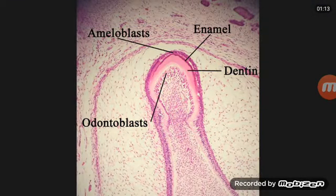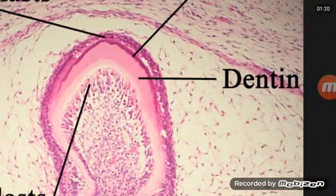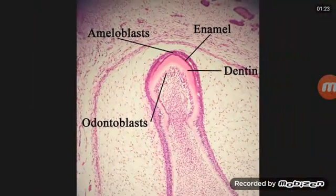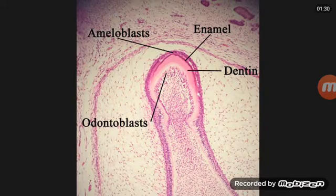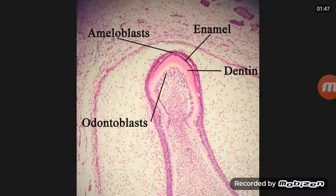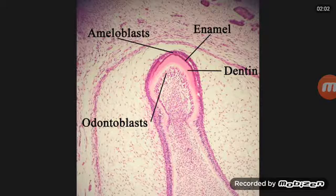Here you can see the odontoblast layer, with dentine, enamel, and ameloblasts visible. Odontoblasts are the second most prominent cells in the pulp. They have a constant location near the pre-dentine, oriented in the odontogenic zone of the pulp — these are pulp-forming cells.